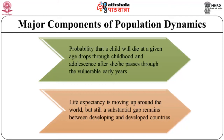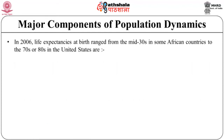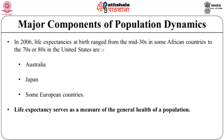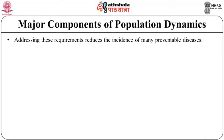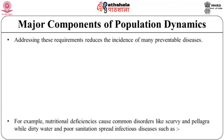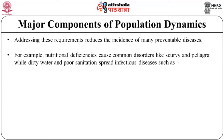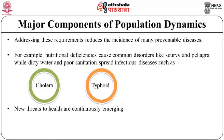In 2006, life expectancy at birth ranged from the mid-30s in some African countries to the 70s or 80s in the United States, Australia, Japan and some European countries. Life expectancy serves as a measure of the general health of a population, depending on adequate nutrition, clean water and sanitation, and access to medical services like vaccinations. Nutritional deficiencies cause disorders like scurvy and pellagra, while dirty water and poor sanitation spread infectious diseases such as cholera and typhoid. New threats to health are continuously emerging, often spreading across international borders through trade and human or animal migration.